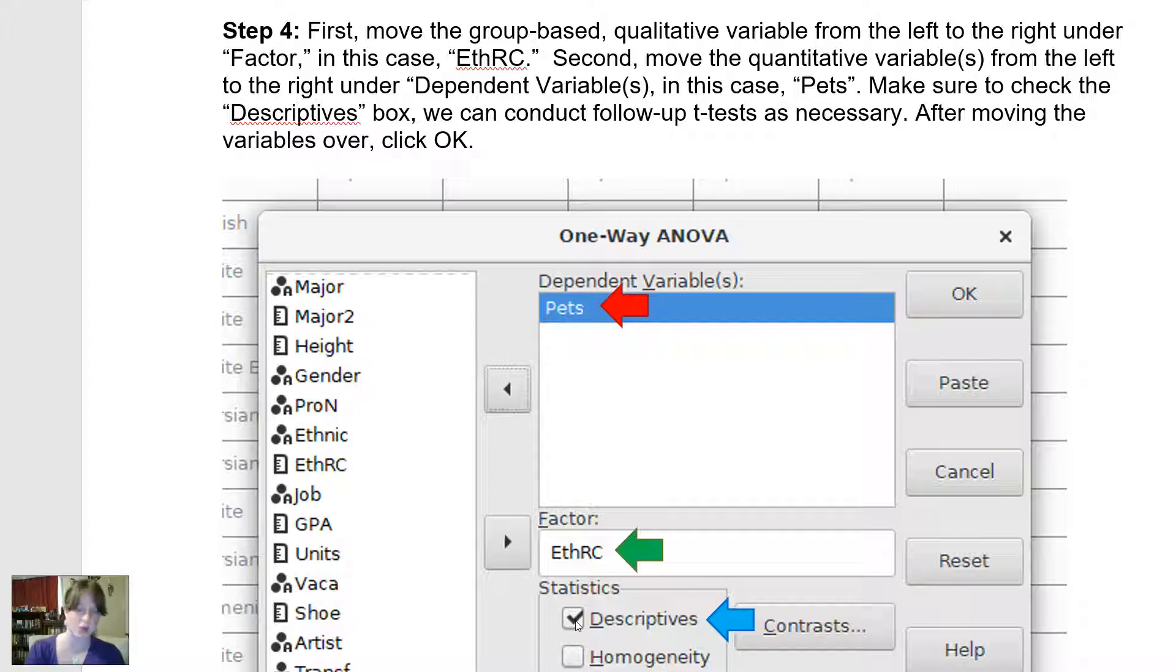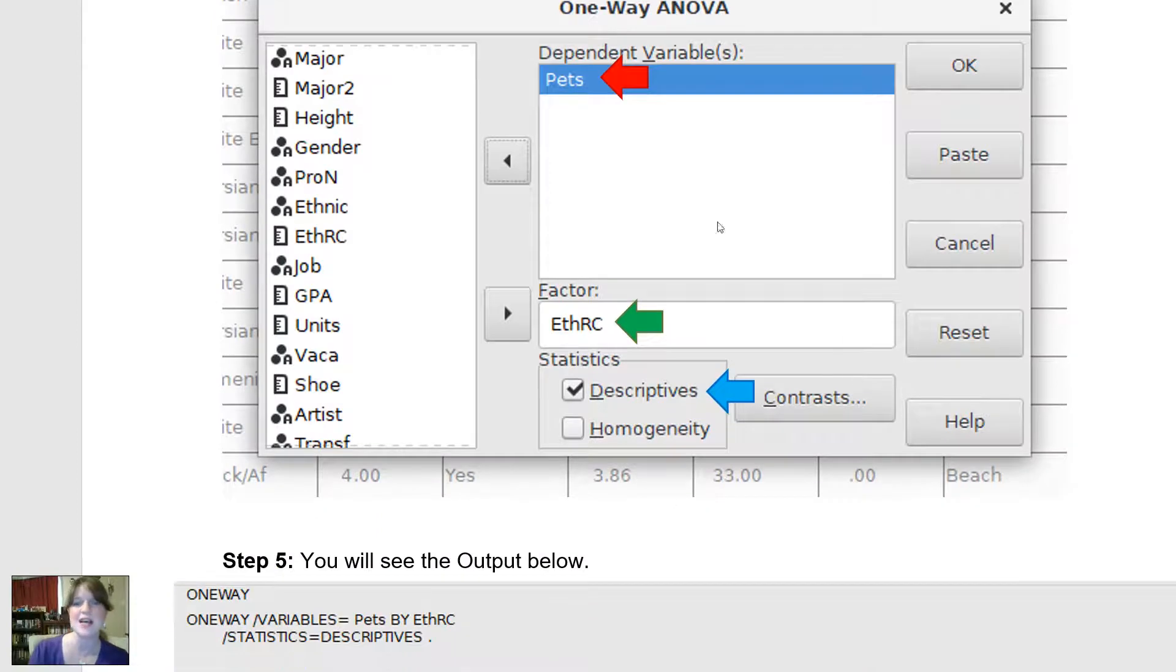The last thing I did was make sure to check the descriptives box. The reason why that is important is so I can see which groups actually had the higher or lower averages. Because if there is a statistically significant ANOVA, if the test tells me that there are differences in the average number of pets among these different groups, I may want to follow up to see which groups differ. Because the ANOVA can't tell me that. It can only tell me that somewhere among these six groups, there are differences. So once I have chosen all of my variables and clicked the descriptives option, I will click OK.